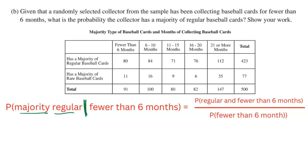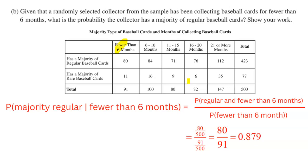The formula for conditional probability shows that in the numerator we need both: majority regular and fewer than six months, which is 80 out of 500. The denominator is just the condition — fewer than six months — that's 91 out of 500. When we divide, those 500s cancel, and we get 80 out of 91. You didn't actually need to use that formula as long as you understand the two-way table: I'm only allowed to look at that column because that's the condition, and 80 of the 91 people there collect regular baseball cards for the majority. So 80 out of 91 is the final answer: 0.879, or 87.9% probability.